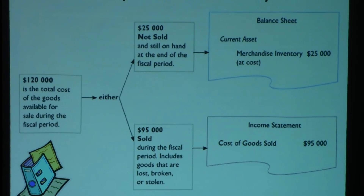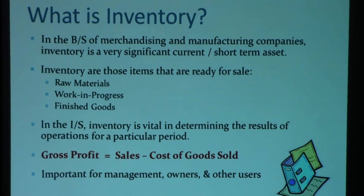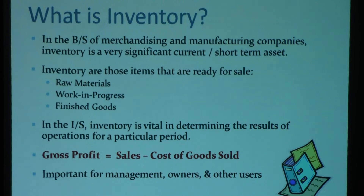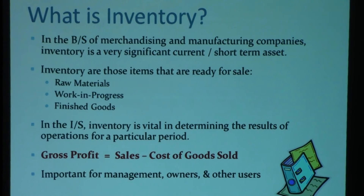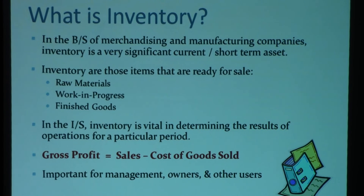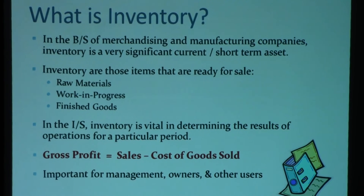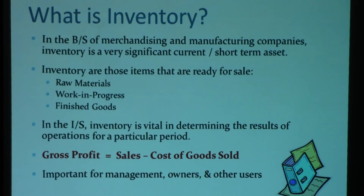Before we move on to the accounting procedures for inventory, I'd like to highlight a few key terms. In the balance sheet of merchandising and manufacturing businesses — manufacturing being a business that produces and makes products — inventory is a very significant asset. It is a short-term asset, not a long-term asset, because your intention is to buy and sell. Inventory items that are ready for sale can be classified as raw materials such as lumber for furniture, work in progress, or finished goods.